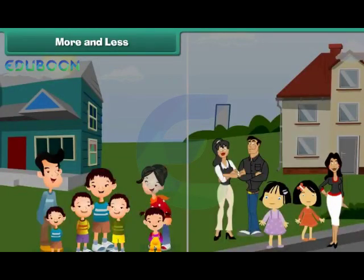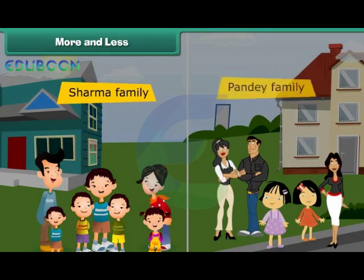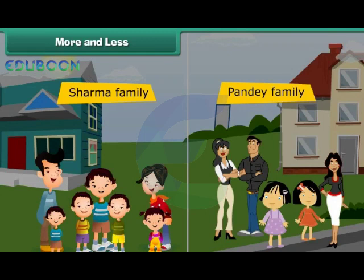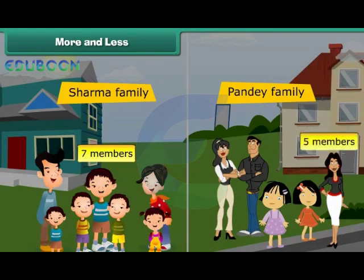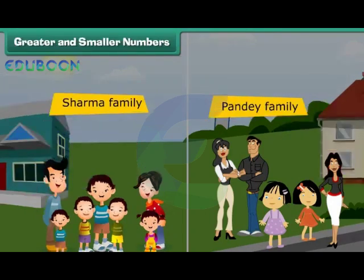Look at these two pictures. On the left is the Sharma family and on the right is the Pandey family. Which family has more members? Sharma family has 7 members and Pandey family has 5 members. Therefore, Sharma family has more members.